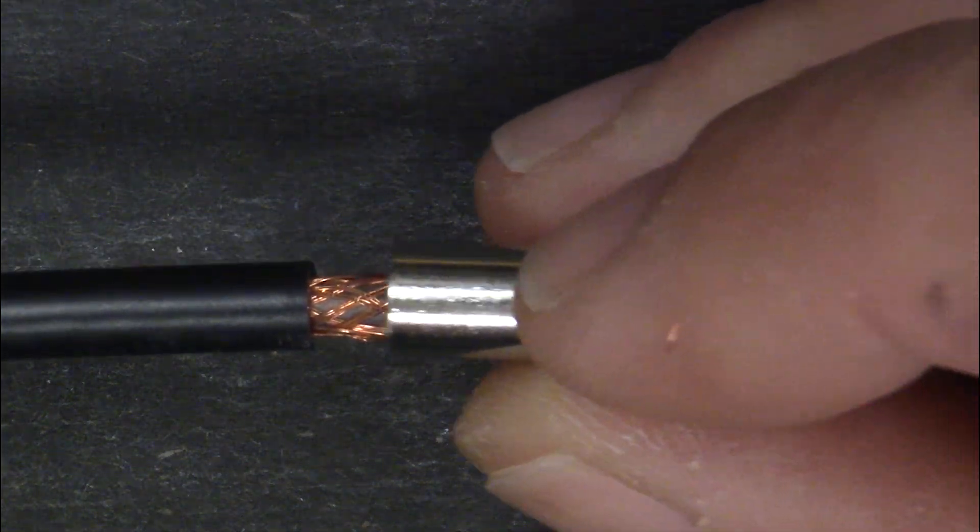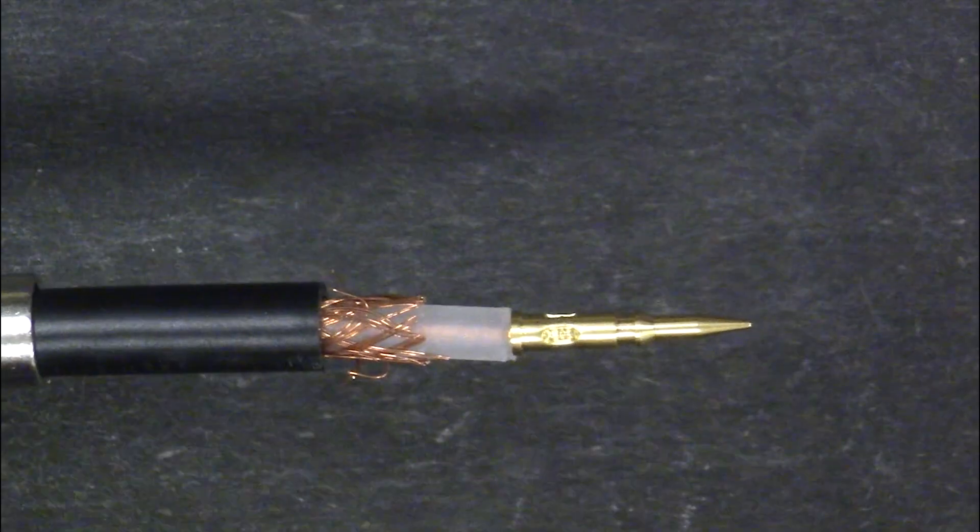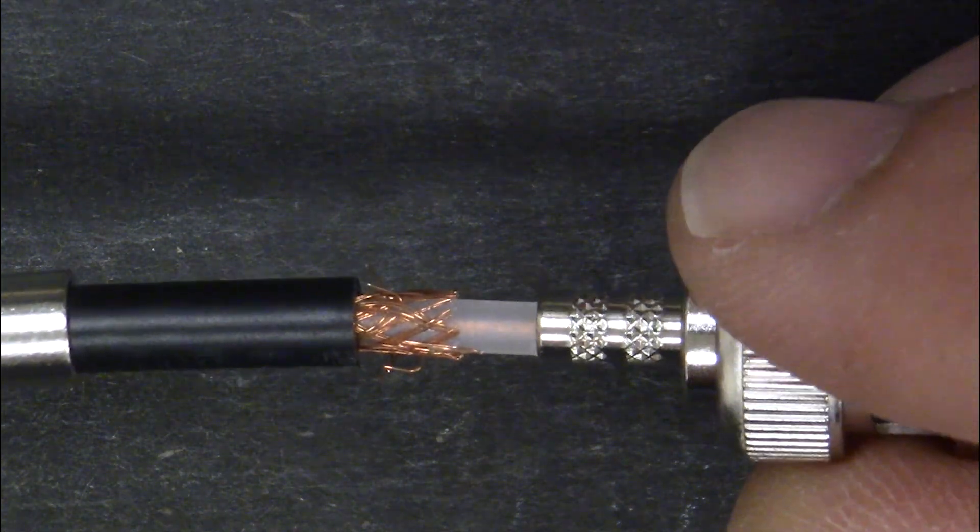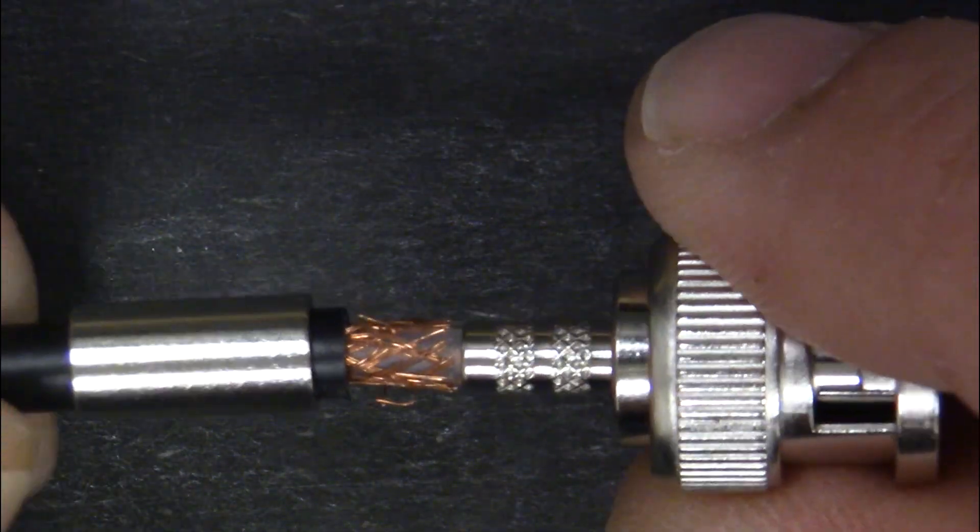Slide the outer ferrule onto the cable. Then twist the plug body onto the cable until the male contact is fully inserted into the plug body.